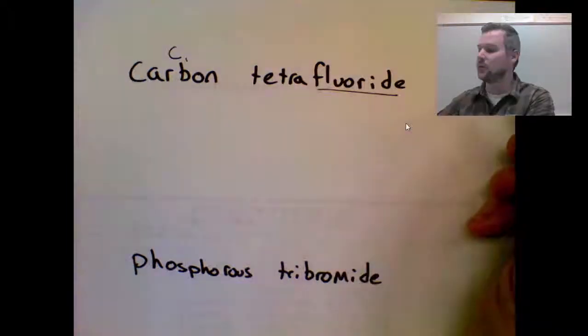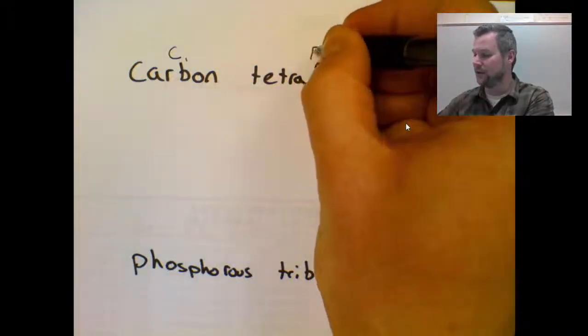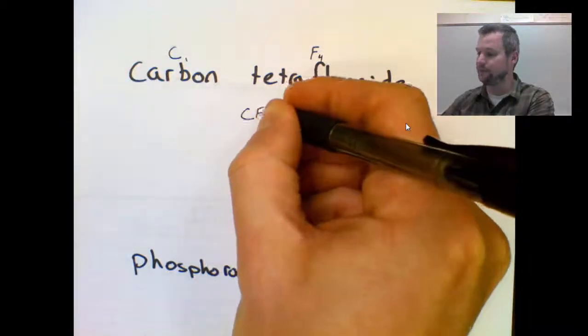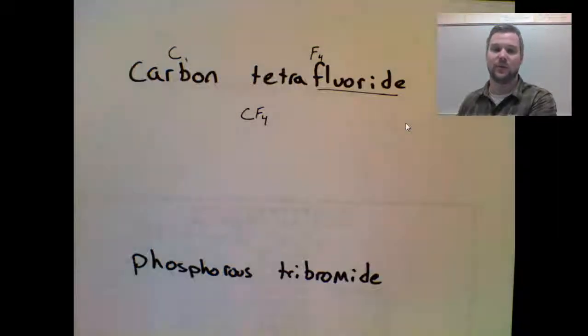The symbol for fluoride is F. Tetra means four, so my subscript will be four. So CF4 is going to be my formula.